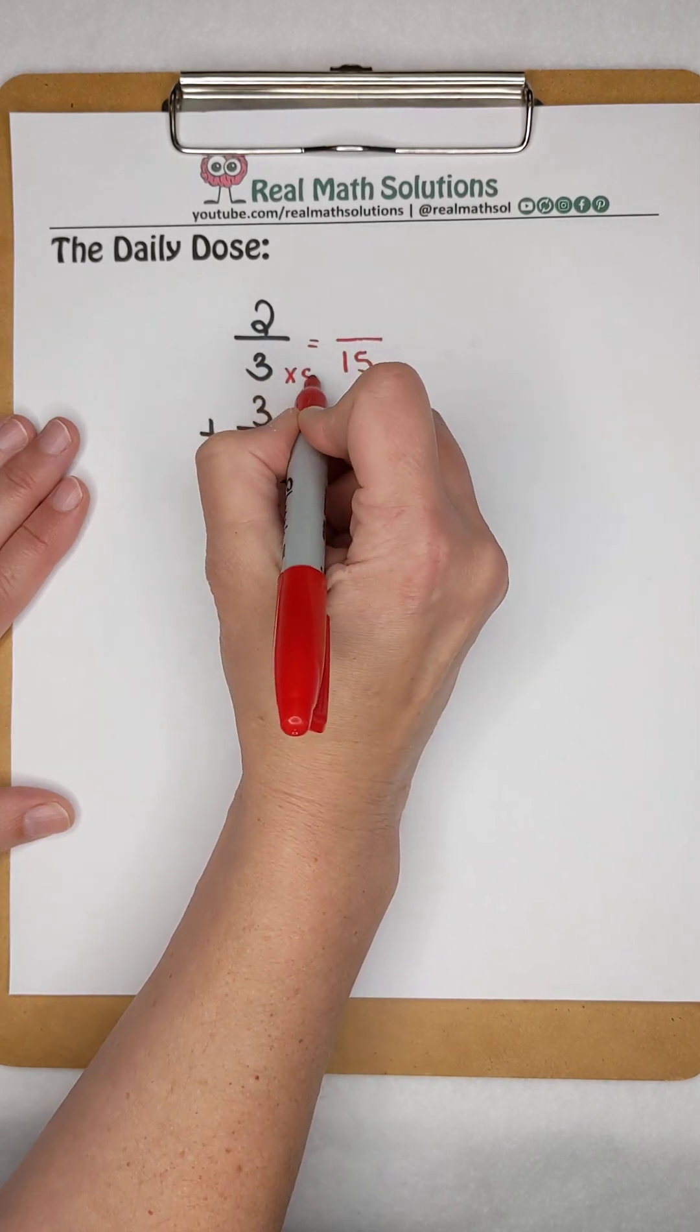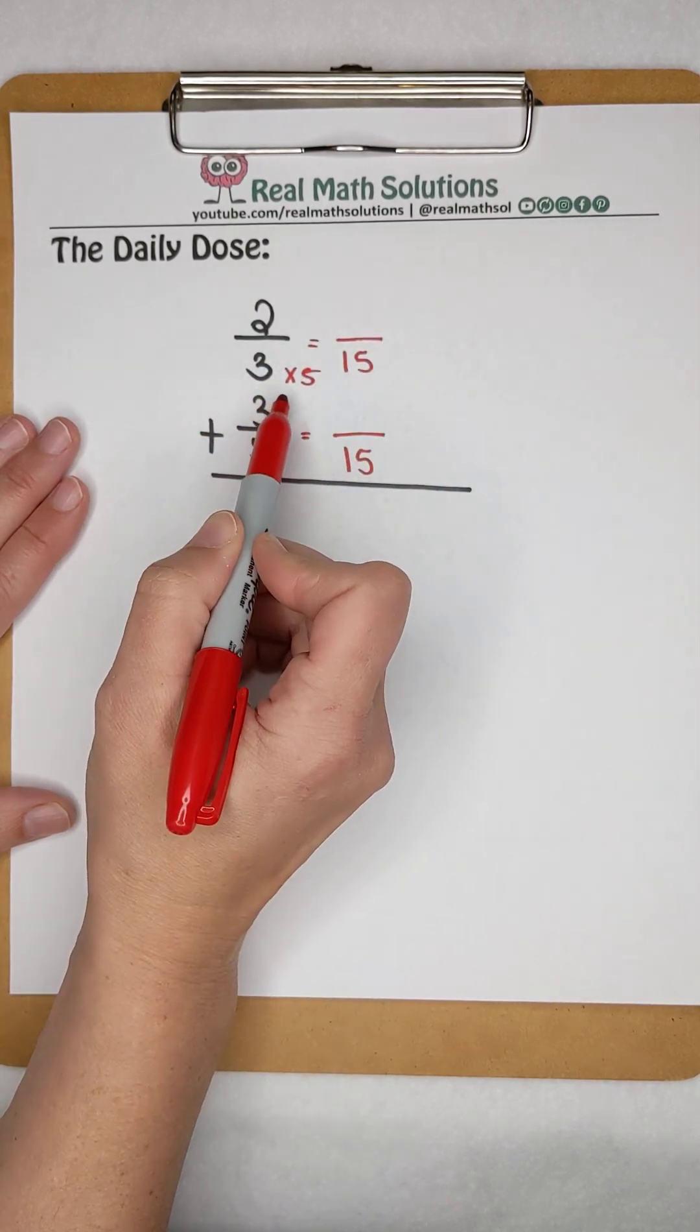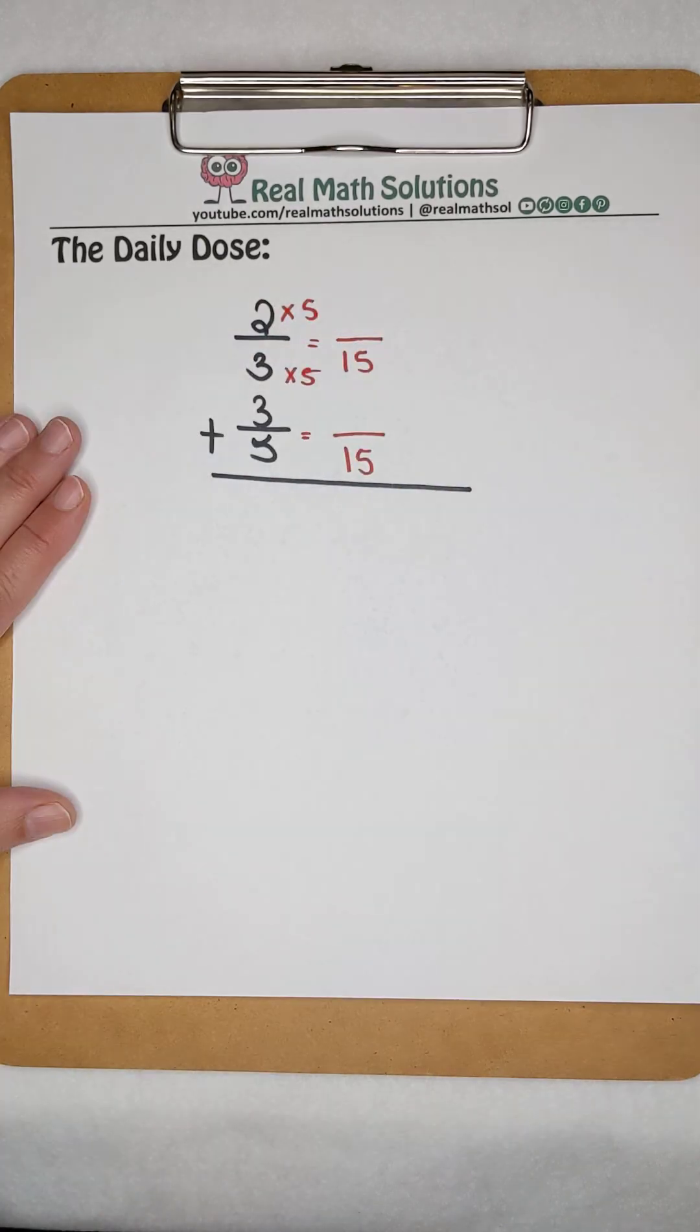To get from 3 to 15, I need to multiply by 5. So whatever I multiply my denominator by, I need to multiply my numerator by as well.